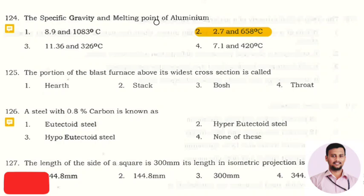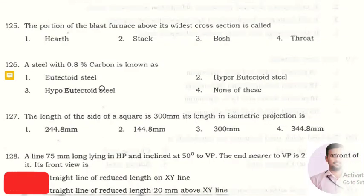So for aluminum, specific gravity is 2.7 and melting point is 658 degrees Celsius. The next question is: the portion of the blast furnace above its widest cross section is called? The right answer is option two, that is stack.